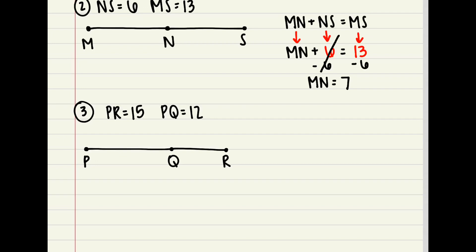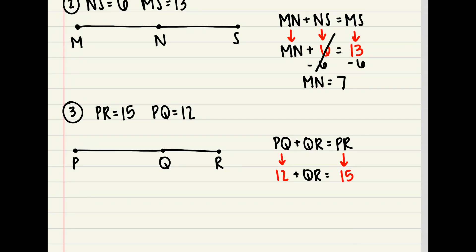In example 3, I tell you that PR is equal to 15 and PQ is equal to 12. First, figure out your Segment Addition Postulate. You should have gotten PQ plus QR equals PR. Go ahead and fill in the missing information — a question will pop up asking which piece of the segment is missing. You should have identified that QR is the missing piece. Go ahead and do your steps to solve for QR.